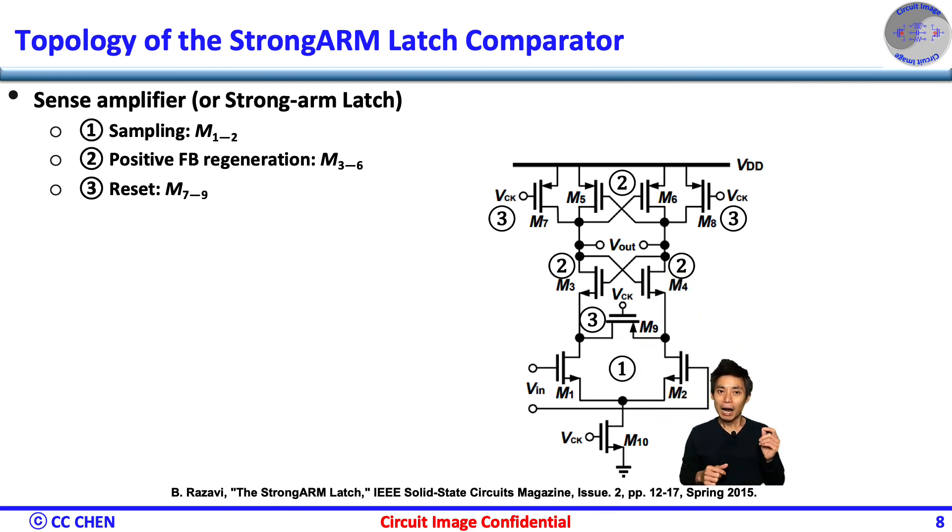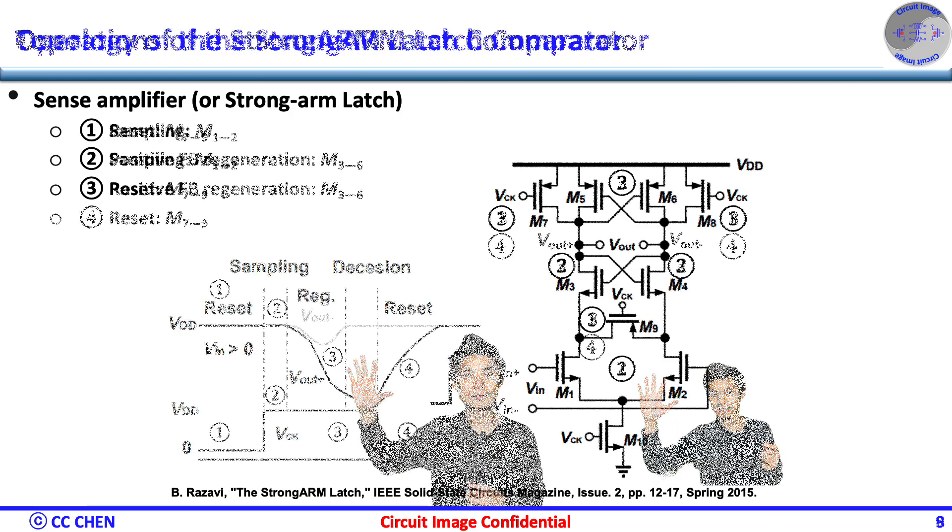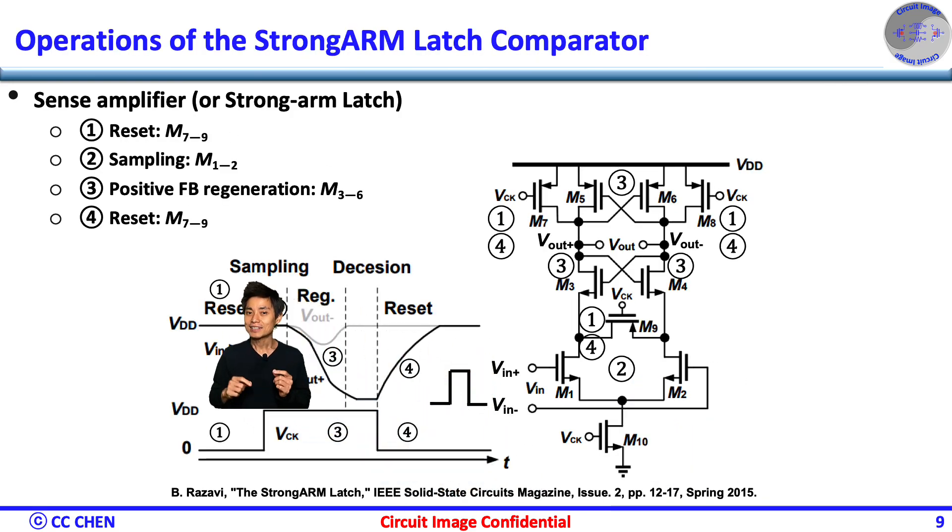After coming up with the topology of a strong-arm latch comparator, think about the operation versus time for five seconds. Right, first, the clock is low and both the output nodes are shorted to VDD. Second,